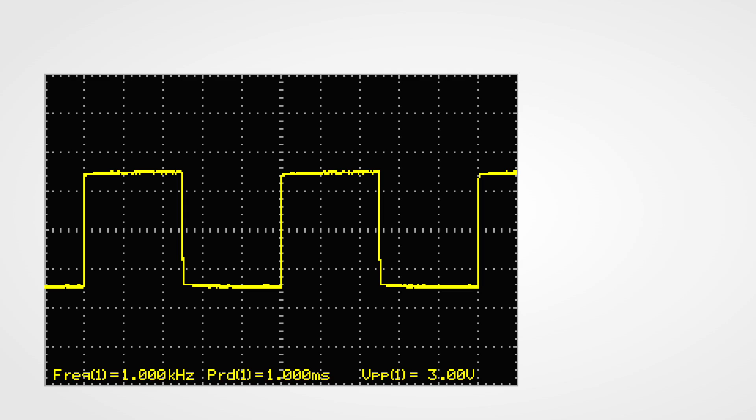Even better, the scope automatically calculates some useful characteristics of the wave, such as its frequency, its period or the time before the wave repeats itself, and its voltage peak to peak.